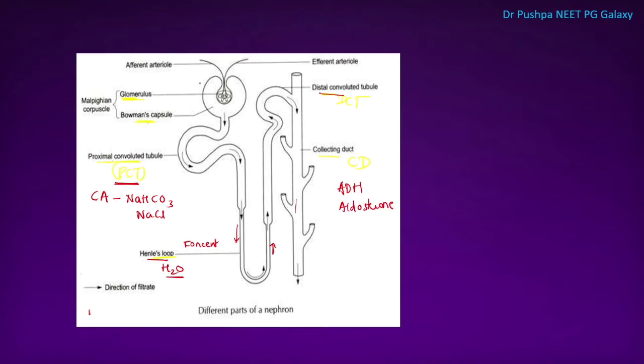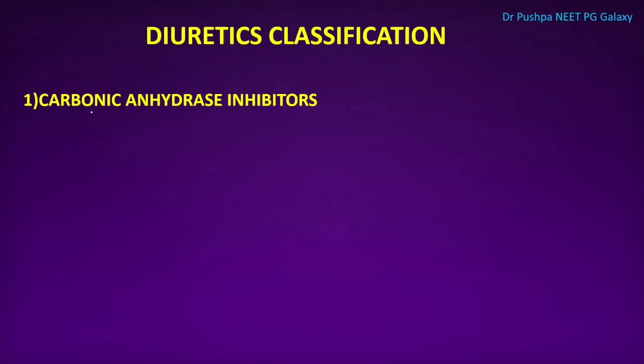So this covers the structural and functional unit of the kidney — the nephron — including its parts and which molecules are absorbed in different segments. Now let us study about diuretics: what they are, their classification, examples, mechanism of action, and side effects.